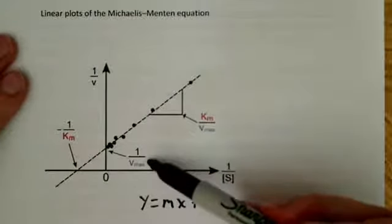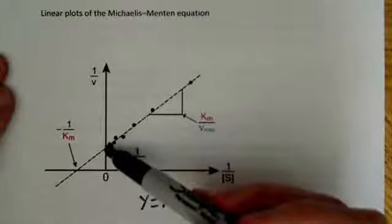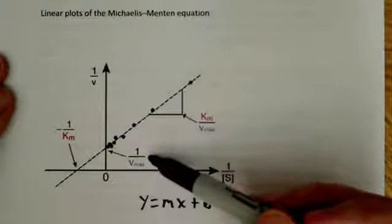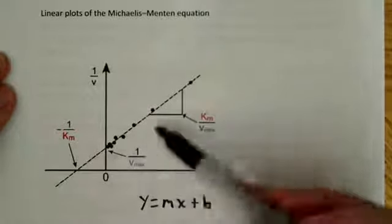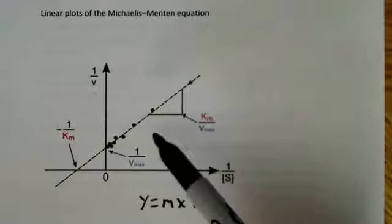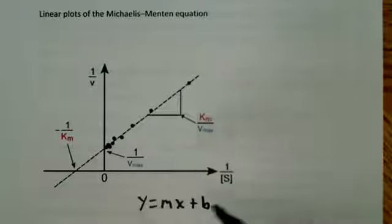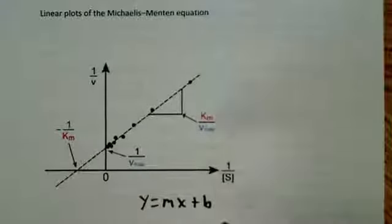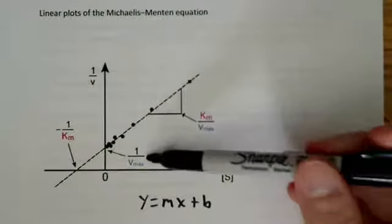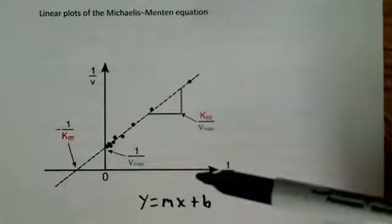The axes are 1/V for the y-axis and 1/[S] (one over the substrate concentration) for the x-axis. If we look at the y-intercept, it equals 1/Vmax. So this is a really convenient way to get the Vmax. If I had a bunch of different numbers and plugged them into an Excel program, I could get the equation Y = MX + B, then set X equal to zero to get the y-intercept, take its reciprocal, and get the Vmax.